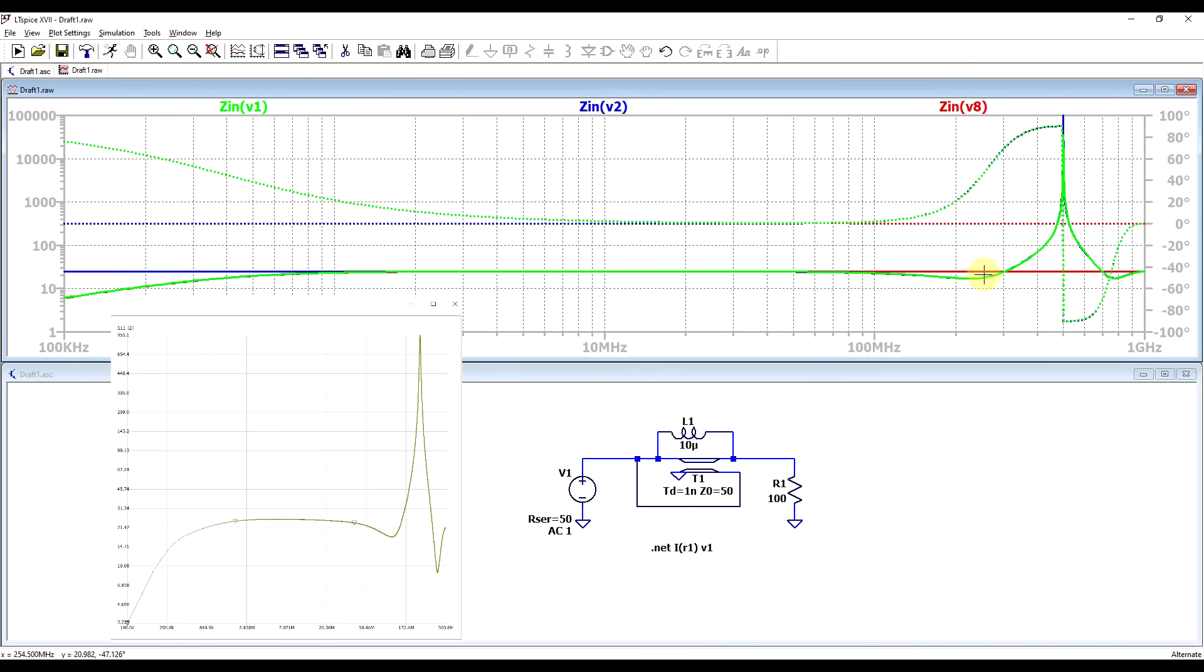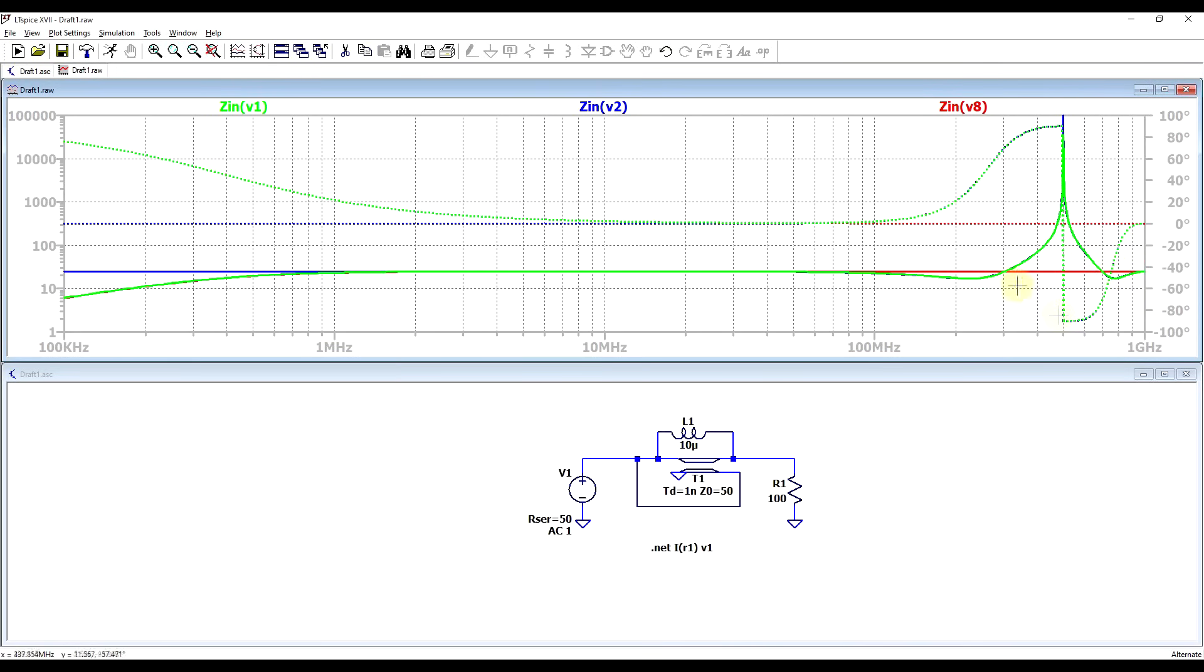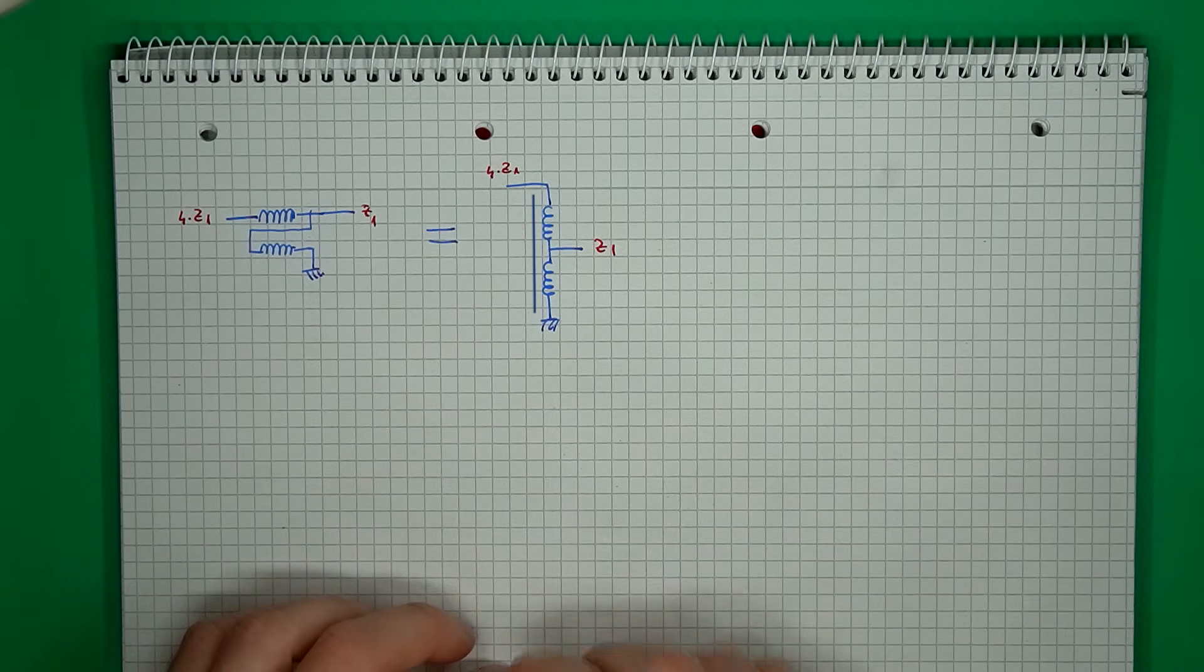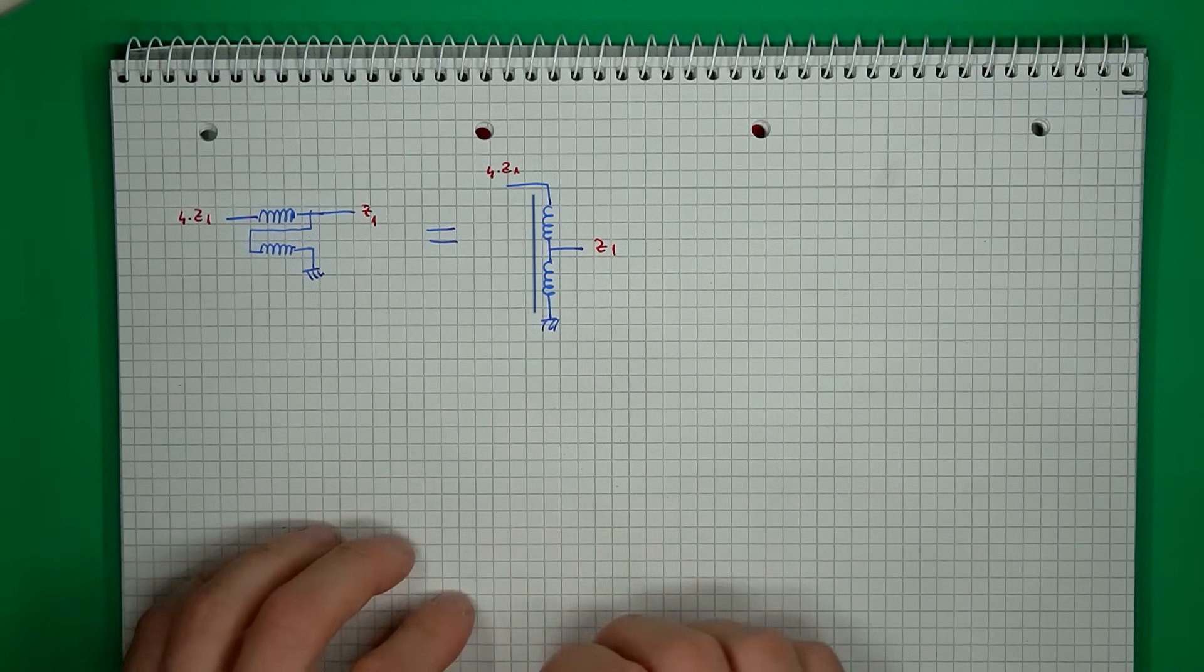So at the moment, we have a simulation model that is replicating our measurement. So what can be done to improve this high frequency behavior? After all, all of these impedance spikes are not something that you really want. To better understand what's going on, and how to fix it, we need to look at how this transformer is supposed to work.